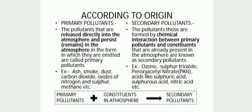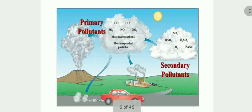According to origin, air pollutants are of two types. Primary pollutants remain in the atmosphere in the same form, whereas secondary pollutants are formed by chemical interaction between primary pollutants and constituents in the atmosphere. Examples of primary pollutants are carbon dioxide, sulfur dioxide, carbon monoxide, etc. Examples of secondary pollutants are ozone, sulfuric acid, PAN, etc.